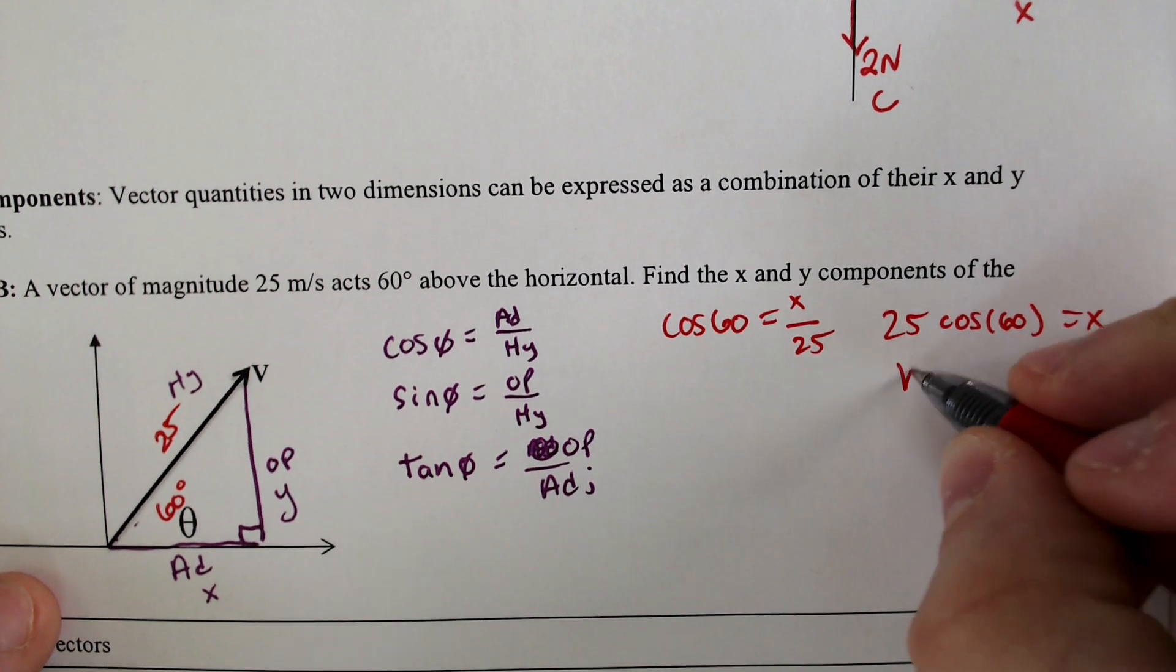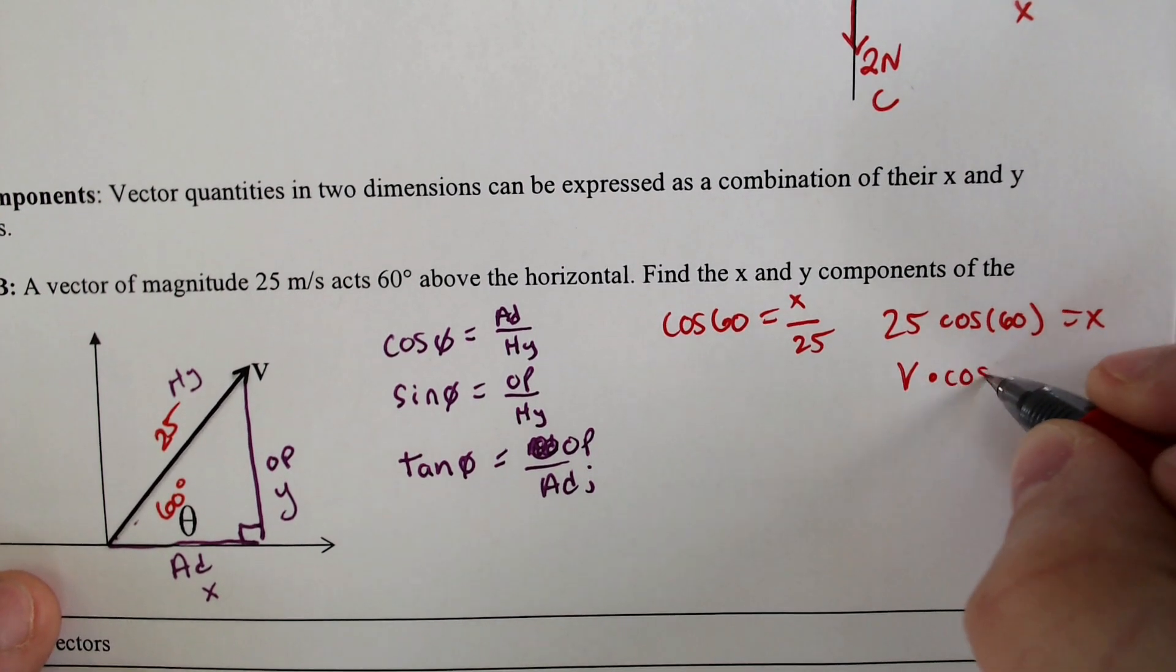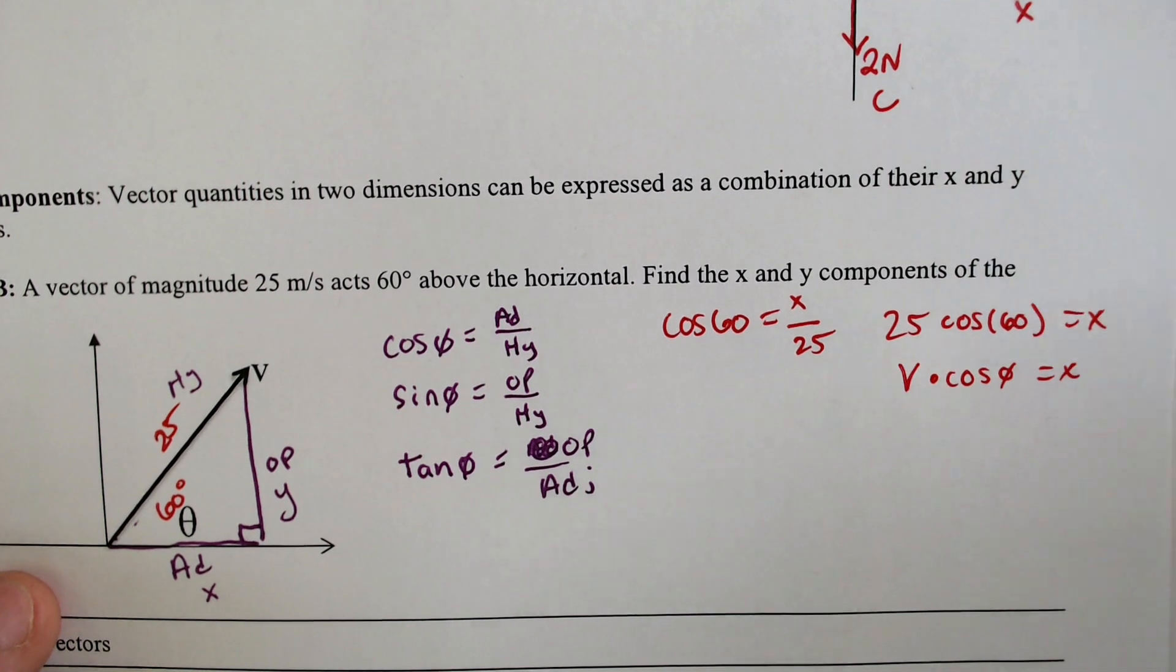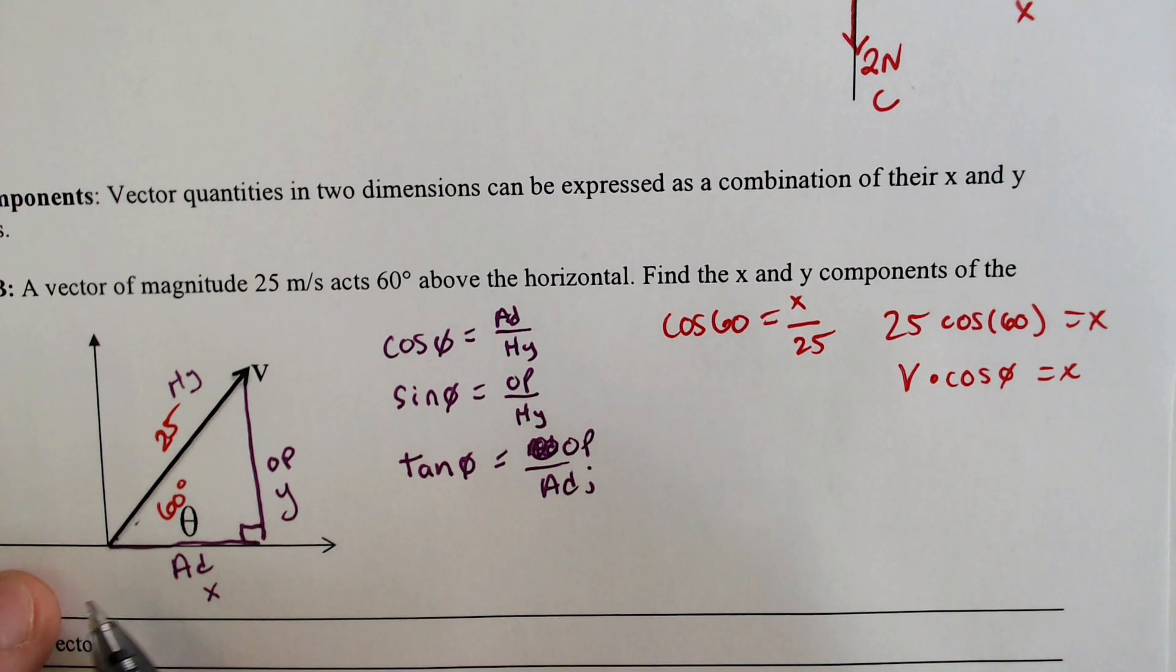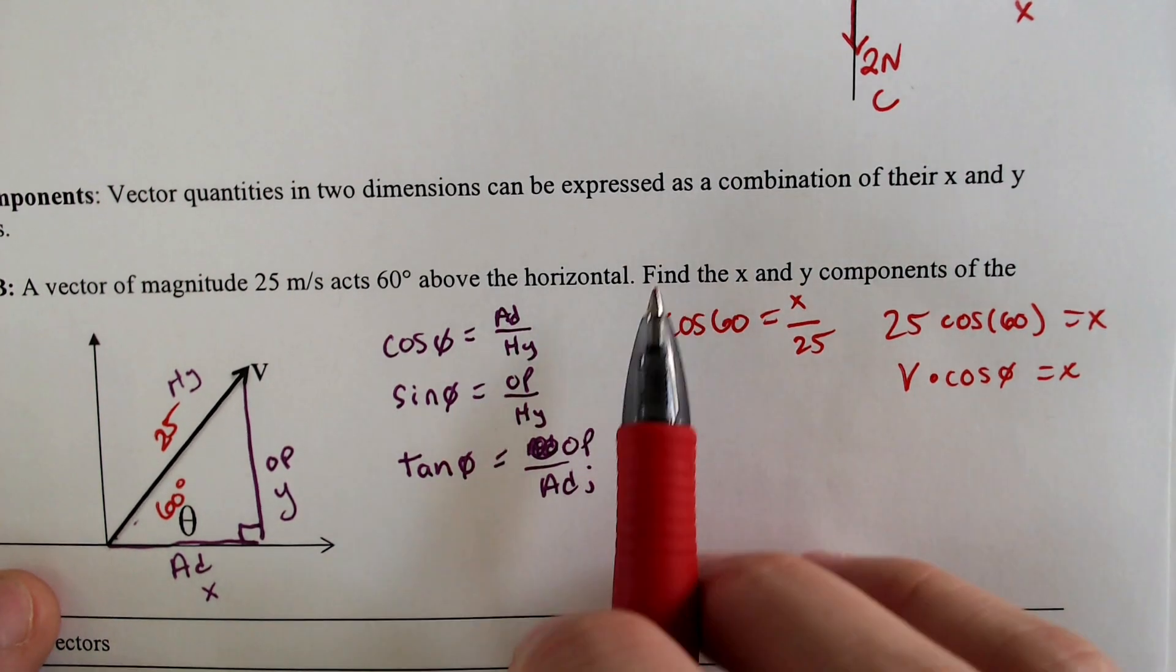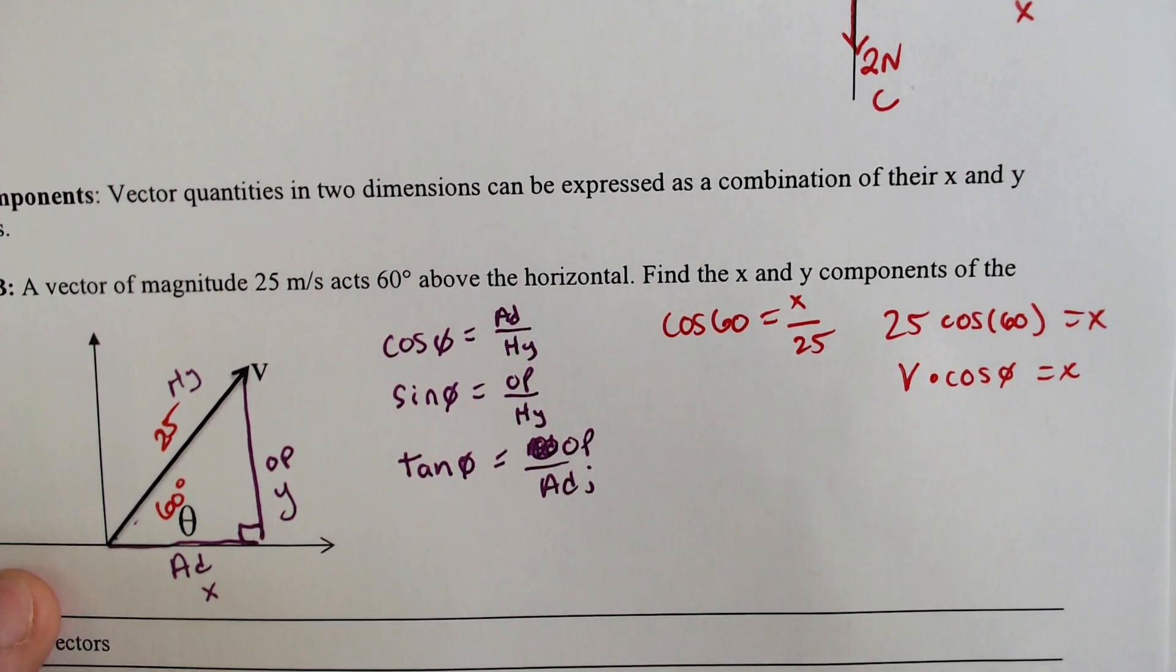Sometimes you'll see a formula, v times cosine theta. I don't necessarily recommend memorizing it, but I would recommend memorizing that cosine tends to deal with left and right, which is x, and then you can do your normal SOH CAH TOA stuff.